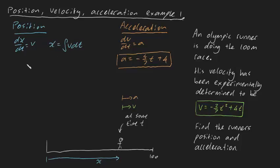And so if we were to integrate, this is what we get. x is going to be equal to the integral of minus two sevenths t squared plus four t dt. And of course, we know what this evaluates into.